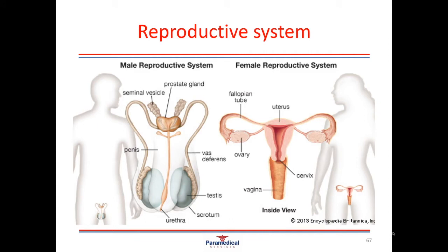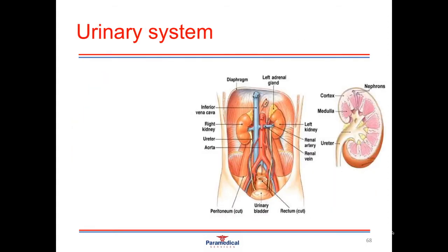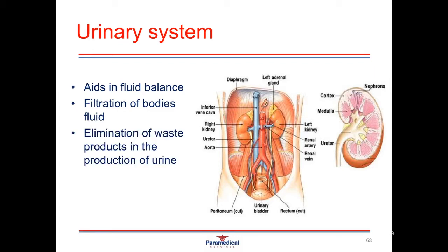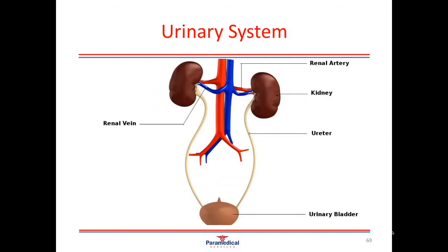The male and female reproductive systems are very different, with very different types of organs and hormones involved, but both are absolutely vital for the continuation of the species. The urinary system is responsible for maintaining or aiding in fluid balance within the body as well as the pH balance. It filters the body's fluid, cleans it of its toxins, and eliminates waste products in the formation of urine.